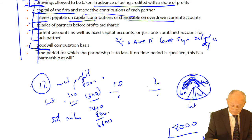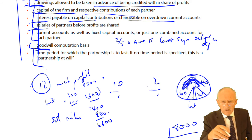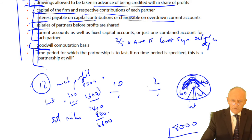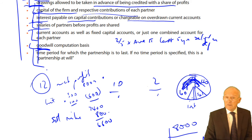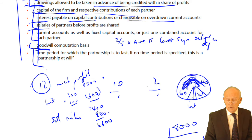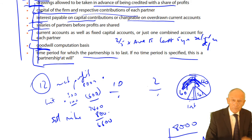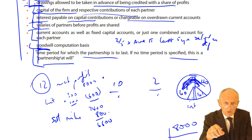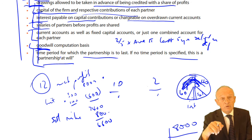Time period — unusual. PricewaterhouseCoopers don't have a fixed time period for their partnership, but you and I could. If we've got a stall at a careers exhibition, our partnership might last just two weeks — that's a joint venture, a partnership for a limited period of time. If there's no fixed time period, it's called a partnership at will, which is capable of being dissolved by any partner giving notice to all the others of their intention to dissolve the firm.